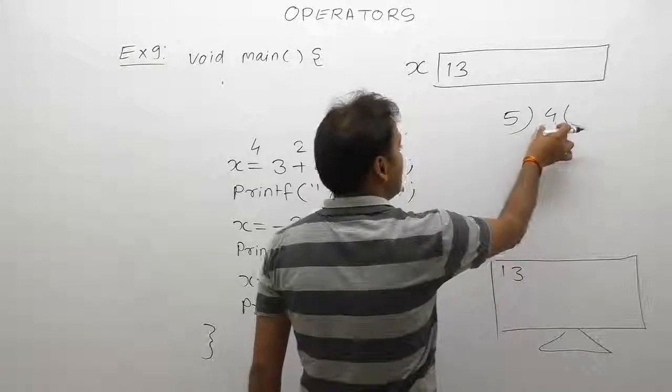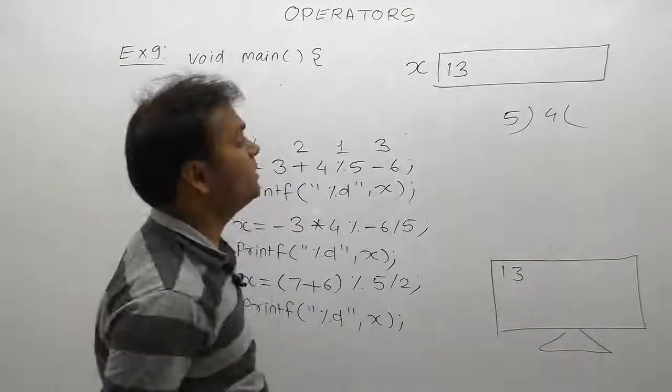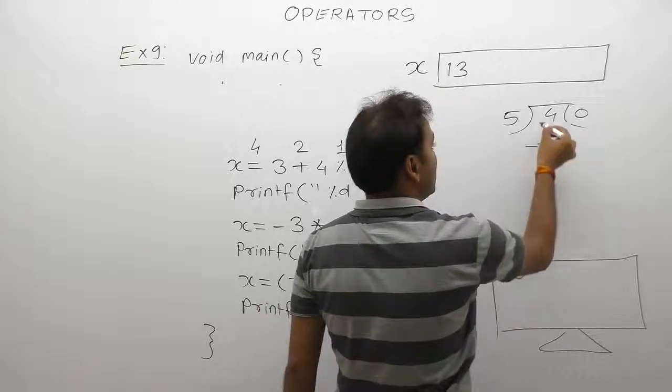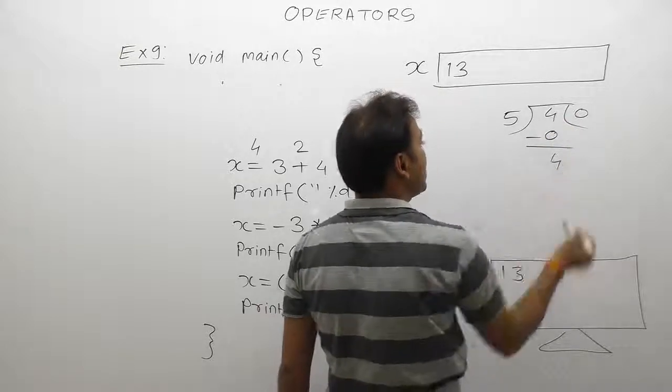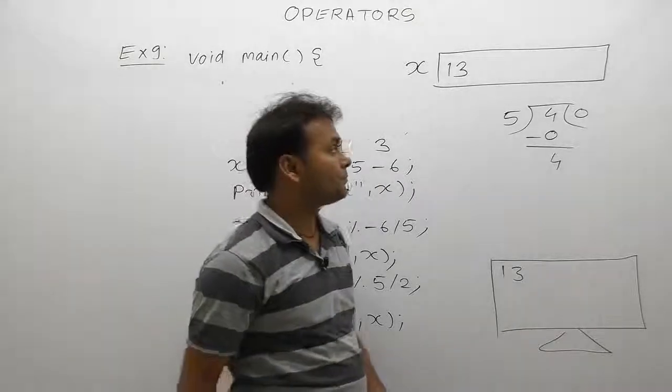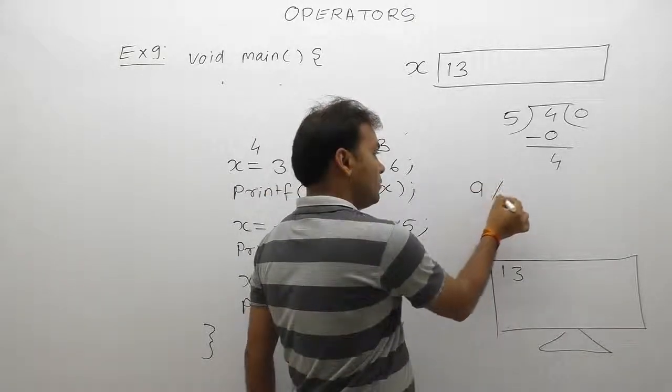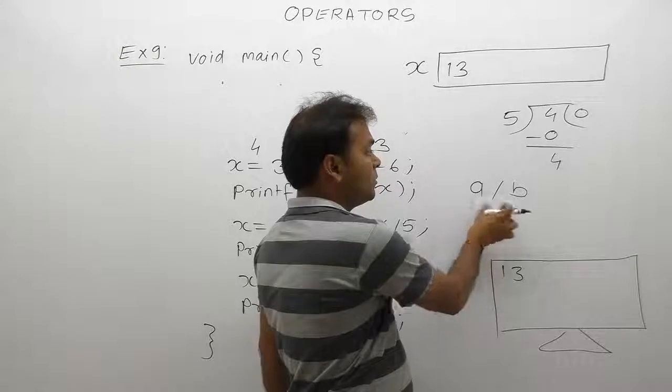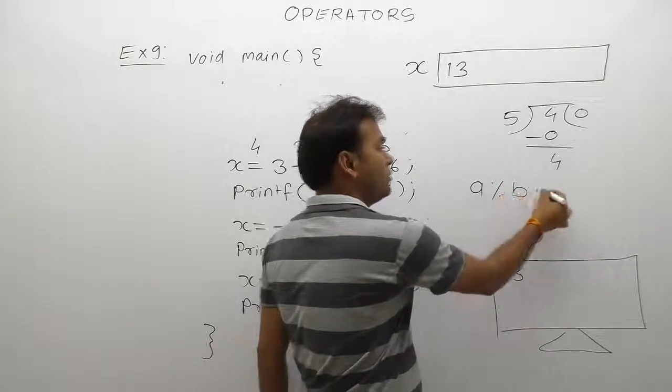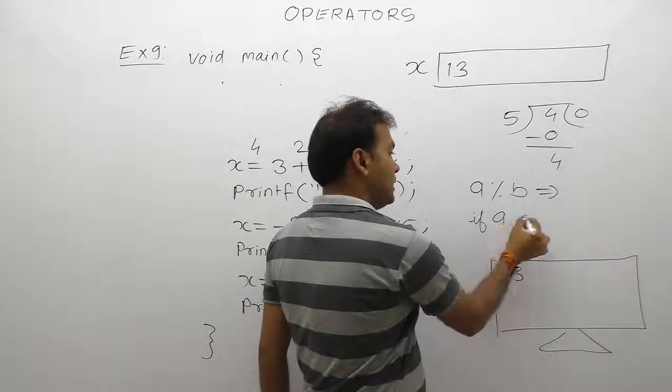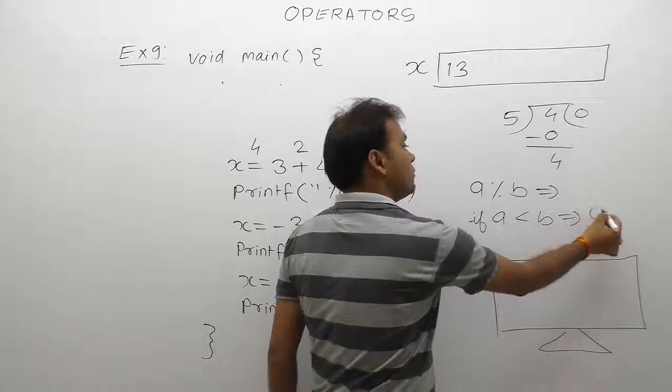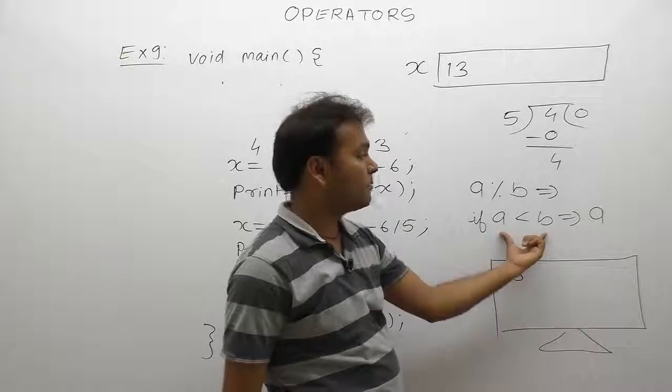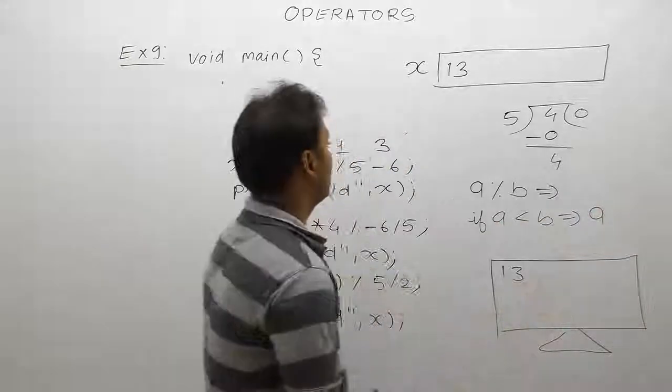Numerator is 4, denominator is 5. 5 times 0 is 0, then subtraction 4 minus 0 is also 4, remainder is 4. Whenever any operand, if the value is less than the divisor, like if a is less than b, then modulo result is always a. In this case, first operand 4 is less than 5, so result is a, means also 4.